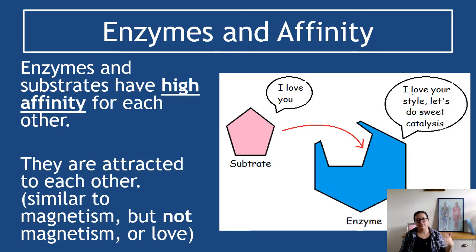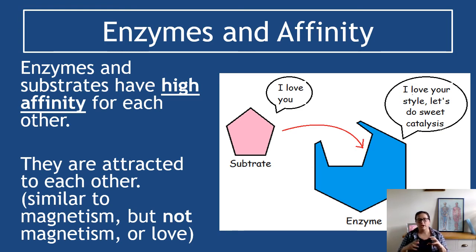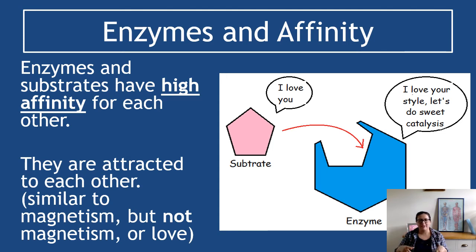The second idea you need to know about enzymes is affinity. Affinity means 'liking' in the English language. Enzymes and substrates have high affinity for each other, meaning they are attracted towards each other - similar to magnetism, but not actually magnetism. They are chemical substances; they can't love and they're not metal, so they can't be magnetically attracted. We're talking about intermolecular forces that draw them together - substrate and enzyme have high affinity for each other.